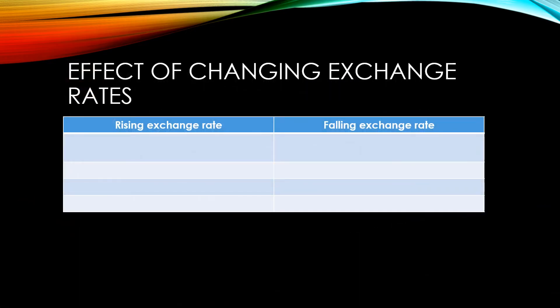If a country has a rising exchange rate, then their exports are going to become more expensive. This means fewer people overseas will want to purchase them. At the same time, imports are becoming cheaper, which may mean that in the domestic market, domestic products lose out as well. Lower demand for our domestic products means we don't have to produce as many products, leading to lower output. This means fewer people are needed to produce that output.